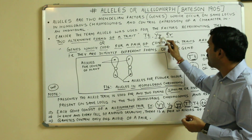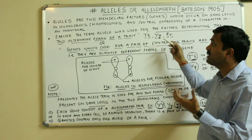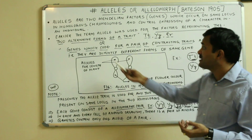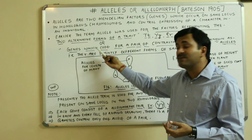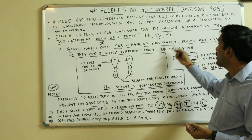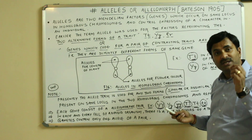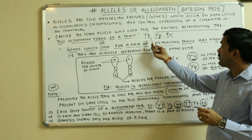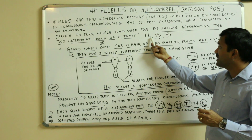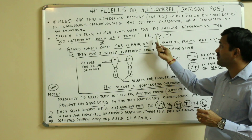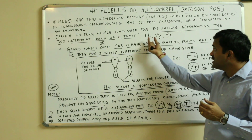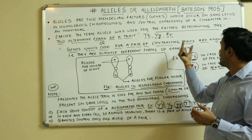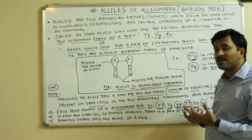Similarly, capital Y and small y, capital R and small r — all these are alleles. We can also represent alleles as genes which code for a pair of contrasting traits. For example, capital T and small t is a pair of contrasting traits, so genes coding for a pair of contrasting traits are known as alleles.